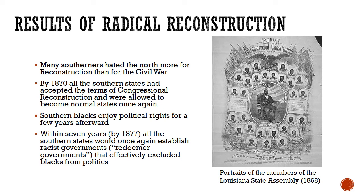For a little while, Southern Black people enjoyed political rights, but only for a few years. By 1877 — within seven years of the 15th Amendment — all the Southern states would once again establish racist governments called Redeemer Governments, because they seemed to restore the South to its old ways. These governments effectively excluded Black people from politics. So Radical Reconstruction made a lot of change for a short time, but within about ten years, things had basically gone back to the way they were before. We'll talk more about why in later videos.